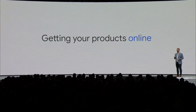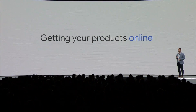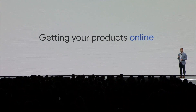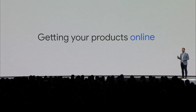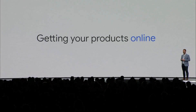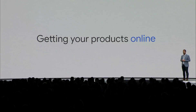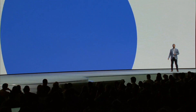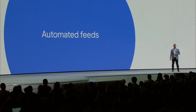In the past, managing a feed to give Google information about your products has been a long and manual process, one involving daily checks to make sure your products are up to date. Later this year, automated feeds for shopping ads will launch.